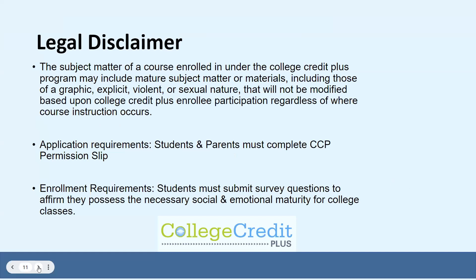The state also requires us to provide this legal disclaimer. The subject matter of a course enrolled in under the College Credit Plus program may include mature subject matters or materials, including those of a graphic, explicit, violent, or sexual nature, that will not be modified based upon College Credit Plus enrollee participation, regardless of where course instruction occurs. You will be required to submit a permission slip signed by student and a parent or guardian. The student will also be required to submit a survey stating that they possess the necessary social and emotional maturity for college classes before enrolling.